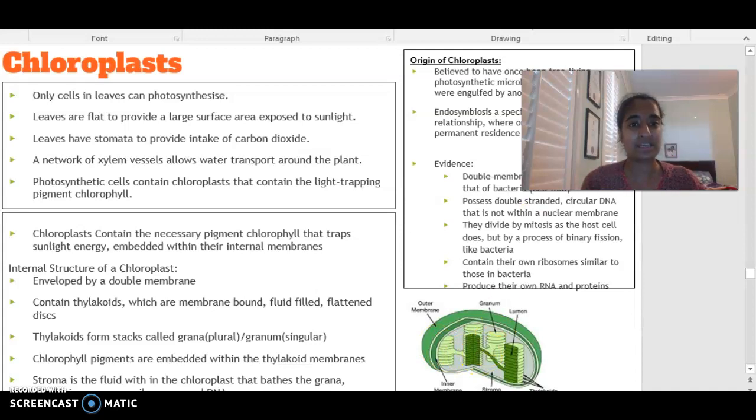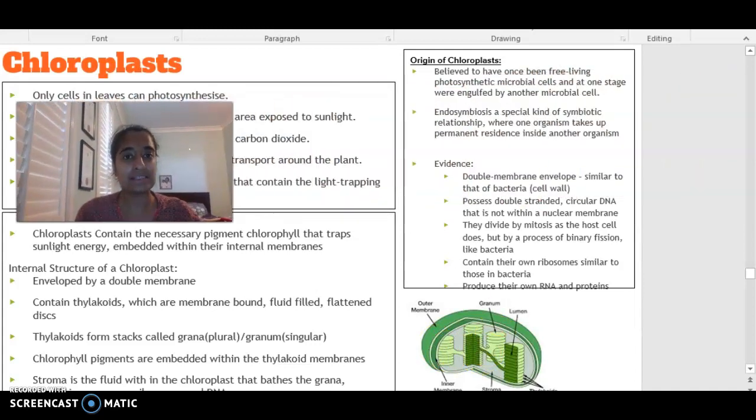In terms of discussing the chloroplast, the chloroplast is believed to have once been a free-living photosynthetic cell that at one stage was engulfed by another microbial cell. So this process, in terms of looking at the origins of a chloroplast, is called endosymbiosis, which is a special kind of relationship where an organism is going to take up permanent residence inside of another organism.